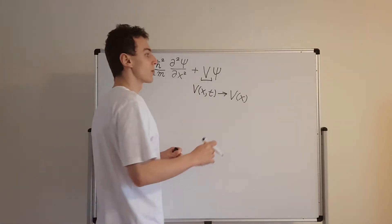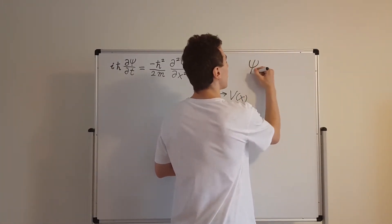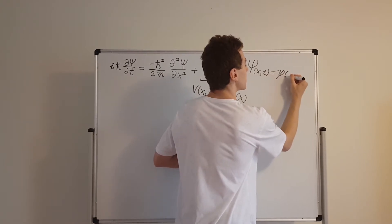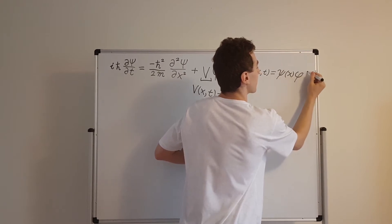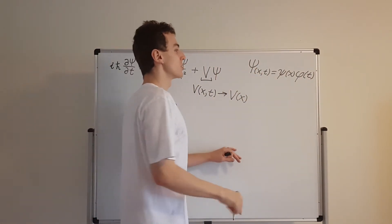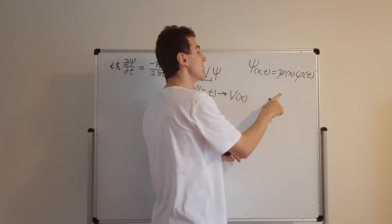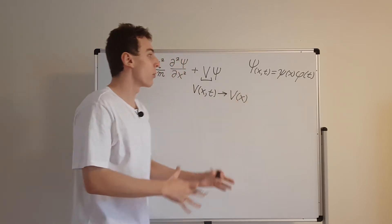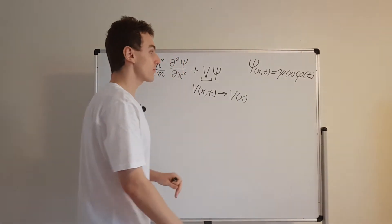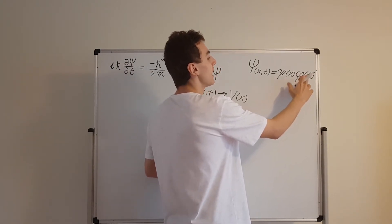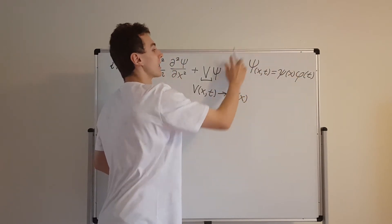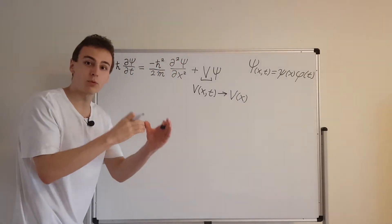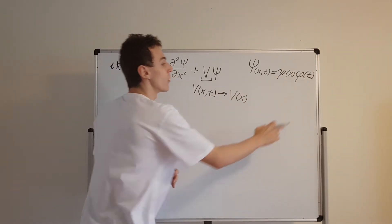We're going to look for solutions to this equation that are of a specific separable form. So Ψ(x,t) has to be a function that depends exclusively on x multiplied by one that just depends on time. This is called a separable solution. I'm using capital Ψ to denote the full wave function, lowercase ψ to denote the part that depends on position, and lowercase φ for the part that depends on time. So ψ times φ gives capital Ψ — we're looking for solutions that can be split into a product of functions.